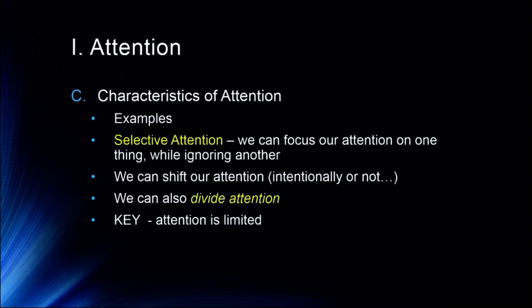We also automatically attend to our name and some other things like that. In particular, we oftentimes focus our attention on anything that might be dangerous. Our attention system is in some ways designed as a survival mechanism. So we'll focus our attention solely on the most dangerous thing in the room, which can result in some difficulties. For example, when we get to talking about memory, we'll talk about what's called the weapon focus effect, where all of our attention is focused on that weapon to the detriment of everything else around, including what the person holding the weapon looked like.